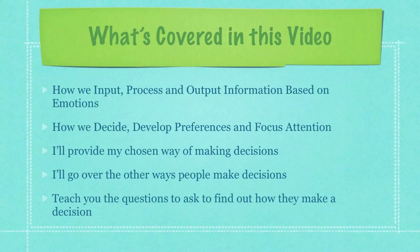What's covered in this video? I'm going to cover how we input, process, and output information based on emotions — how we decide, develop preferences, and focus attention. I'll provide my chosen way of making each of these decisions, then go over the other ways people use to make decisions, the tools or programs in their brain that help them make decisions, and then I'll teach you the questions to ask to find out how exactly that person makes decisions. You can use these same questions to figure out how you make decisions. There is no right nor wrong way to make these decisions or to see the world in your specific way.